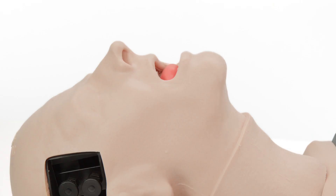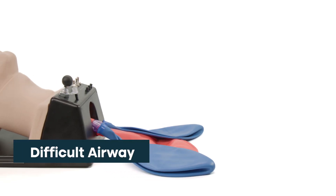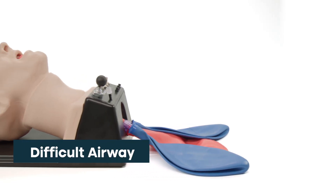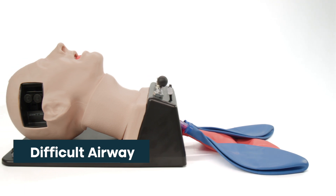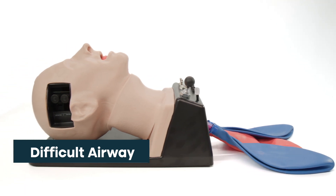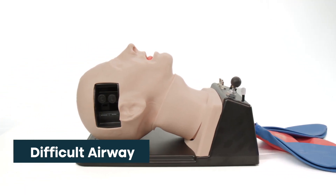Model features include Difficult Airway. The internal airway has an enlarged tongue, swollen posterior cartilages, and an elongated epiglottis.